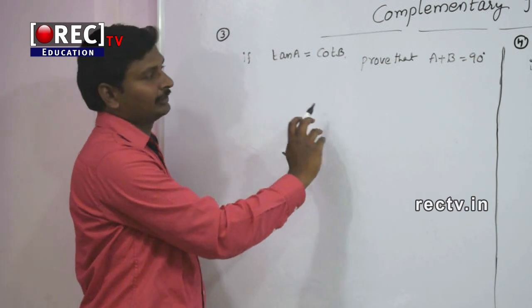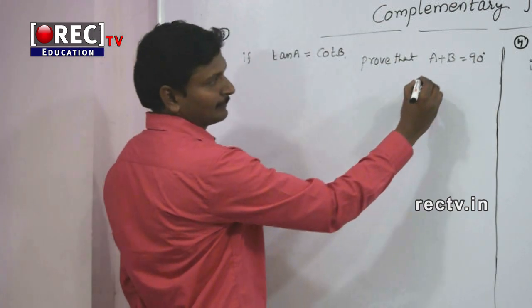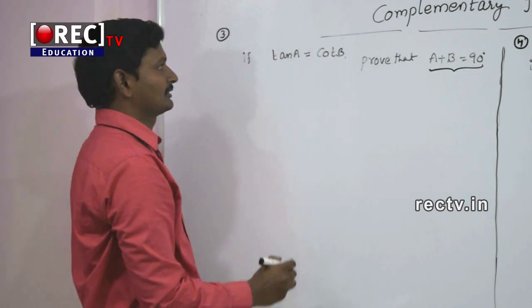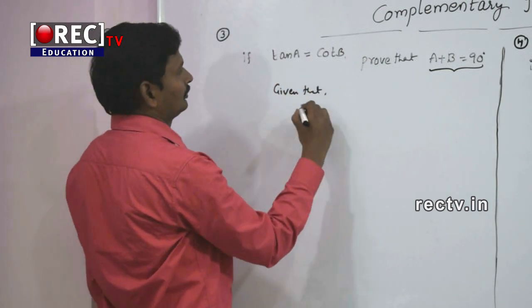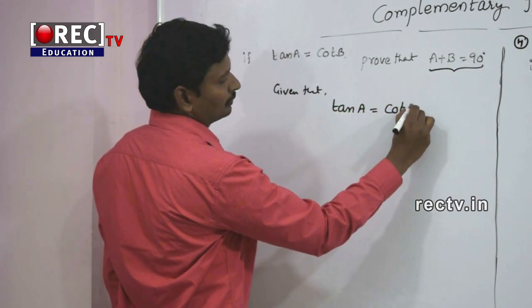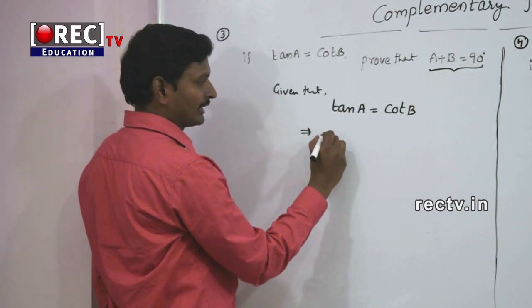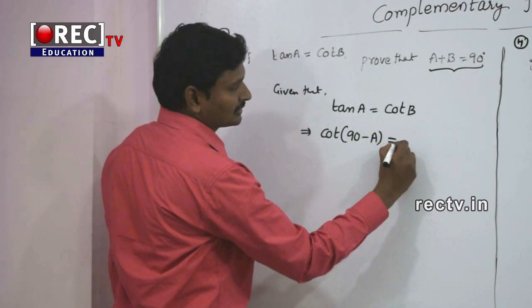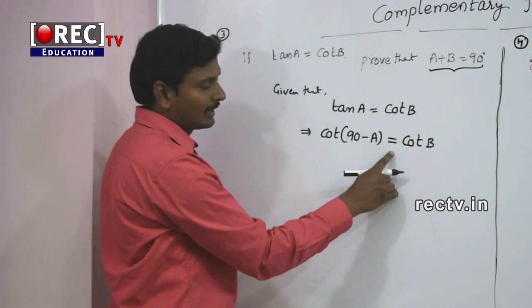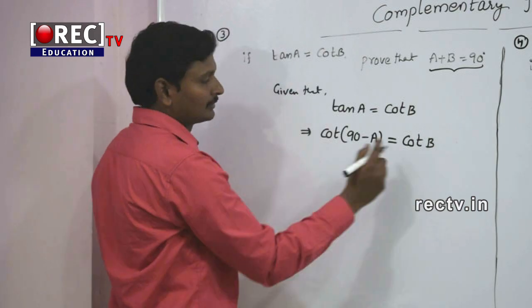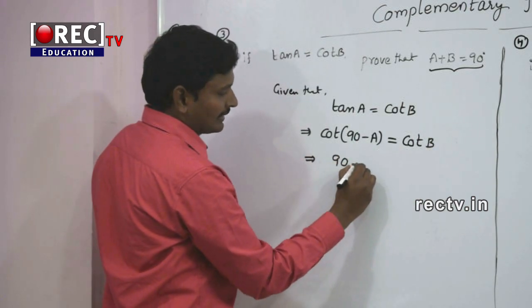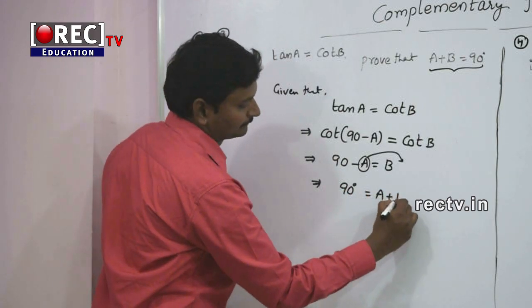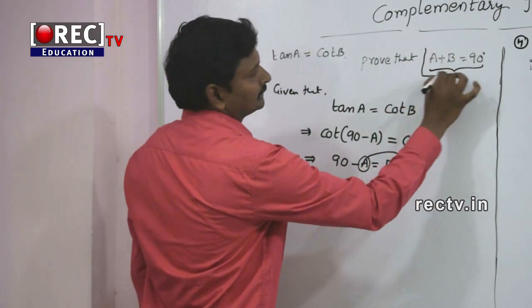Fourth question: if tan A = cot B, prove that A + B = 90°. This means A and B are complementary angles. We write tan A as cos(90° - A), so cos(90° - A) = cos B. Equating the angles: 90° - A = B, which gives 90° = A + B. This is the required proof.